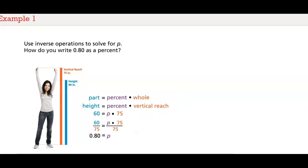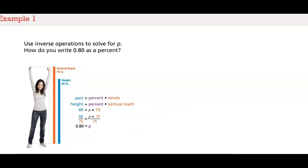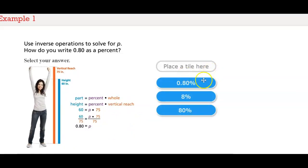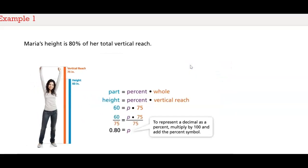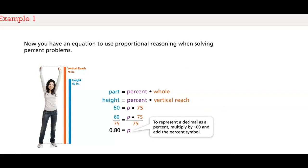How do you write 80 hundredths as a percent? To represent the decimal as a percent, multiply by 100 and add the percent symbol. Maria's height is 80% of her total vertical reach. Now you have an equation to use proportional reasoning when solving percent problems.